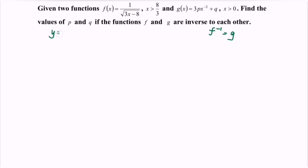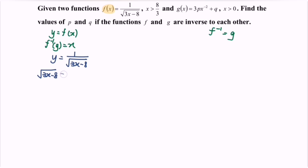So, y is equal to f(x), and f inverse of y is equal to x. Let f(x) become y, so y is equal to 1 over square root of 3x minus 8. Kindly cross-multiply the situation, and we will have square root of 3x minus 8 equals to 1 over y. Then square both sides, so we will have 3x minus 8 is equal to 1 over y squared.